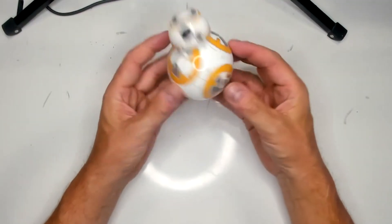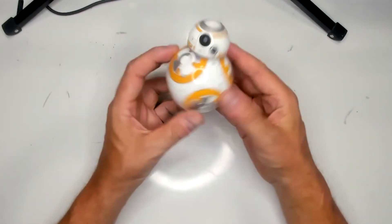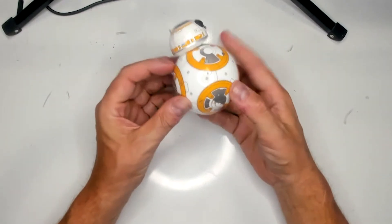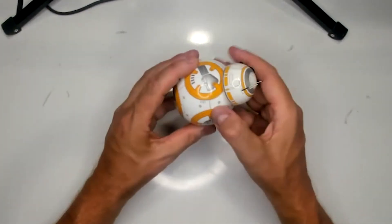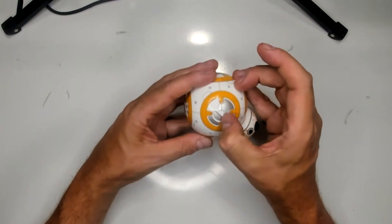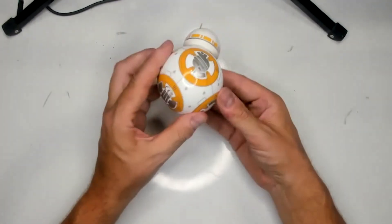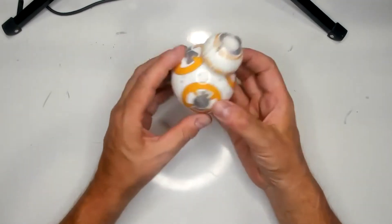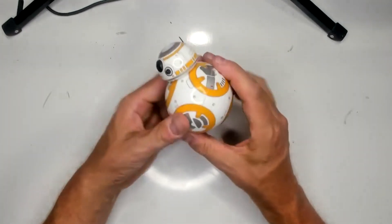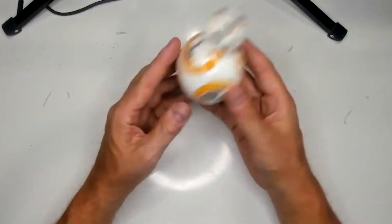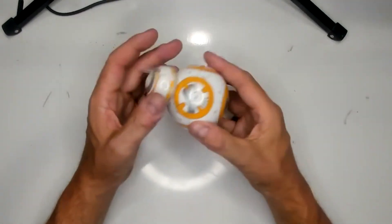Unlike the R2-D2, the BB-8 does not have any screws to remove. It's actually glued together. There's one seam running down the entire length of the sphere and I'm going to have to cut there. So I'm going to get started on that with a Dremel and then take it apart, take the batteries out, replace the batteries and then glue it back together.